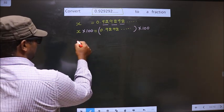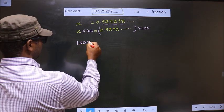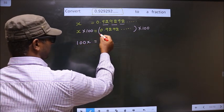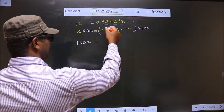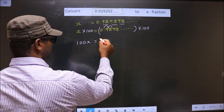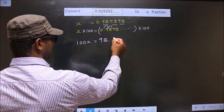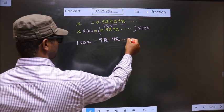Now, 100 times x, we get 100x equals... When I multiply this with 100, the decimal will shift two places to the right, making it 92.92 and so on.